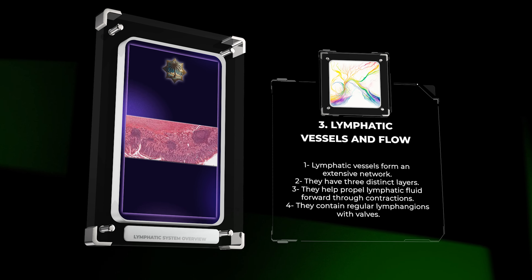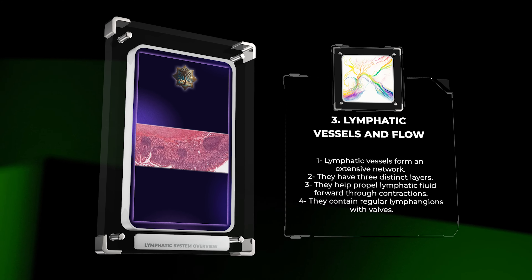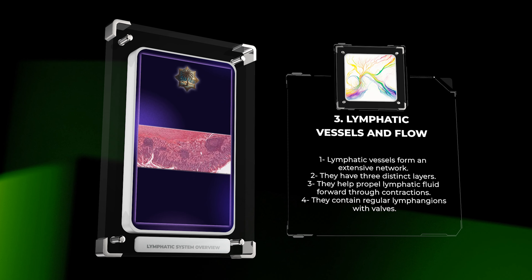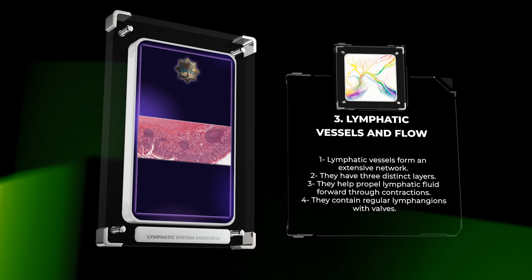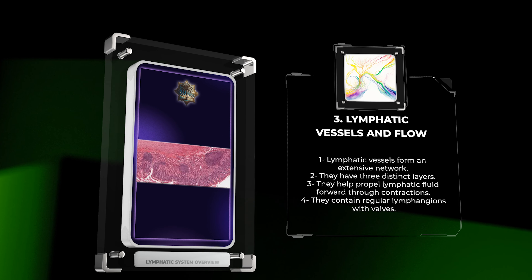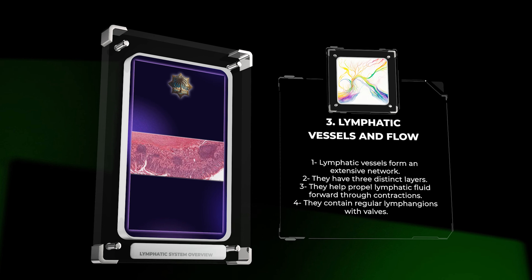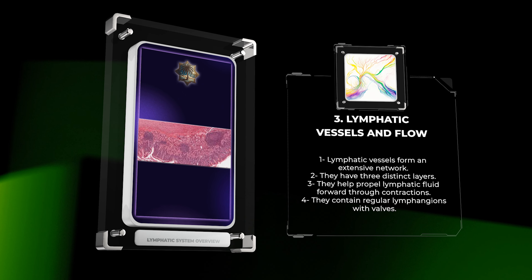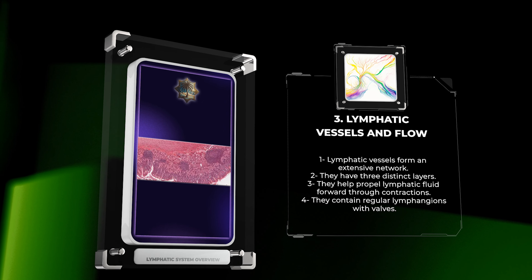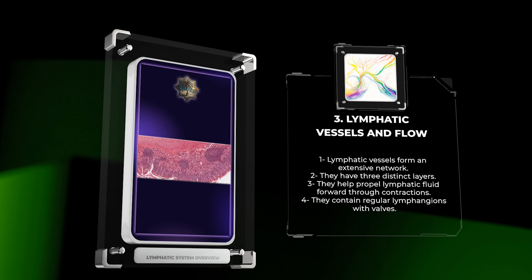Beyond the lymphatic capillaries, lymphatic vessels form an extensive network that gradually increases in size and complexity. The lymphatic vessels have three distinct layers: an inner endothelial lining, a medial layer composed of smooth muscle, and an outer layer of connective tissue. This layered structure helps propel lymphatic fluid forward through rhythmic contractions of the smooth muscle, supporting unidirectional flow. Additionally, lymph vessels contain regular lymphangions — small compartments with valves that further aid in maintaining the forward flow of lymph.